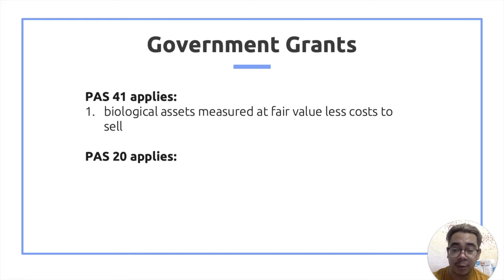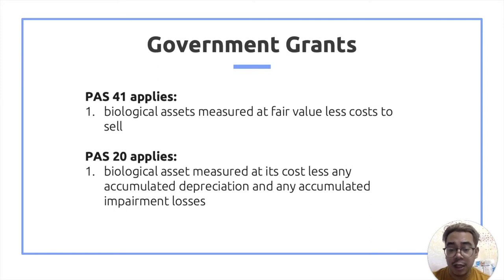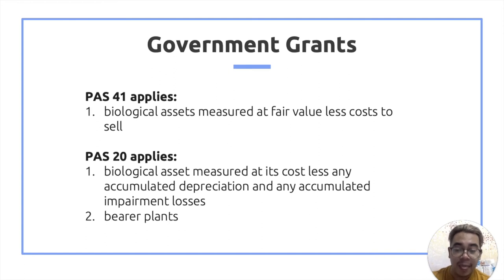PAS 20 applies to: number one, biological assets measured at cost less any accumulated depreciation and impairment losses, because they are treated like PPE and grants related to PPE are governed by PAS 20. Number two, government grants related to bearer plants — since bearer plants are measured in accordance with PAS 16 PPE, government grants related to bearer plants are also accounted for under PAS 20, just like PPE.